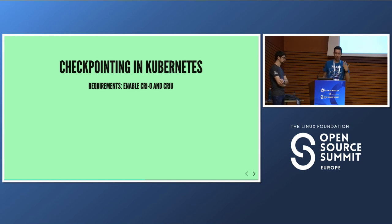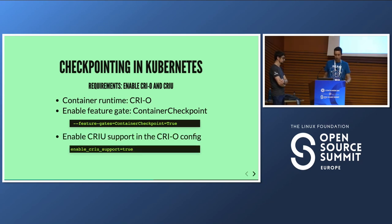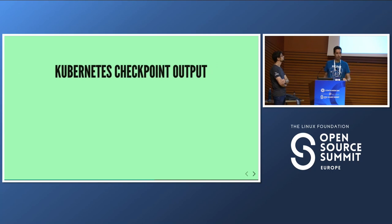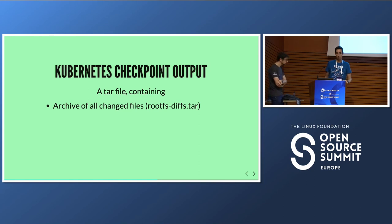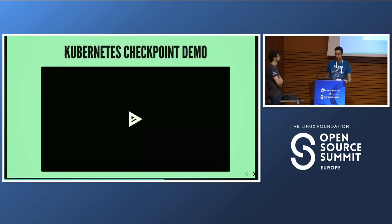The requirements are: you need both CRIU (checkpoint/restore in userspace) and CRI-O (the container runtime — not to be confused with CRIU). The CRI-O container runtime needs to be enabled as a feature gate, and you need to confirm CRIU support is enabled in the CRI-O config. The output will be a tar file containing an archive of all changed files, images of process memory, file descriptors, some metadata about the tar file itself, bind mounts info for the container, and even stats and logs.